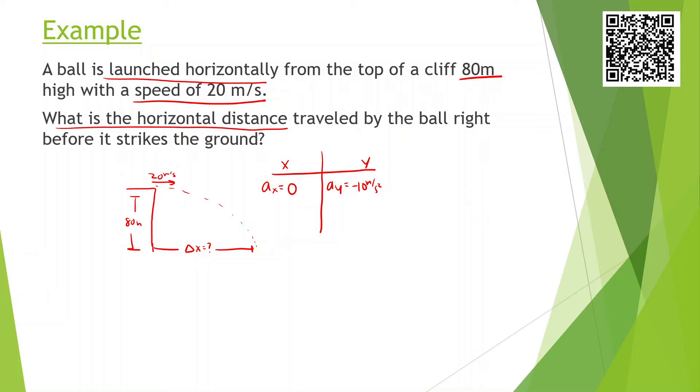We know it's launched horizontally so the velocity in the x direction is 20 meters per second. We know that this ball is going to be falling down in the y direction 80 meters. So we can say displacement y is negative 80 meters. And what we're looking for is this displacement in the x direction.